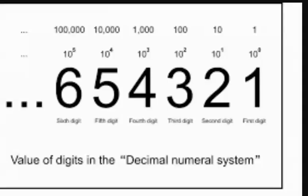Let's have a look at the decimal number system. The decimal number system is the number system which has 10 digits, starting from 0 to 9. Any number using these 10 digits can be written in the decimal number system.